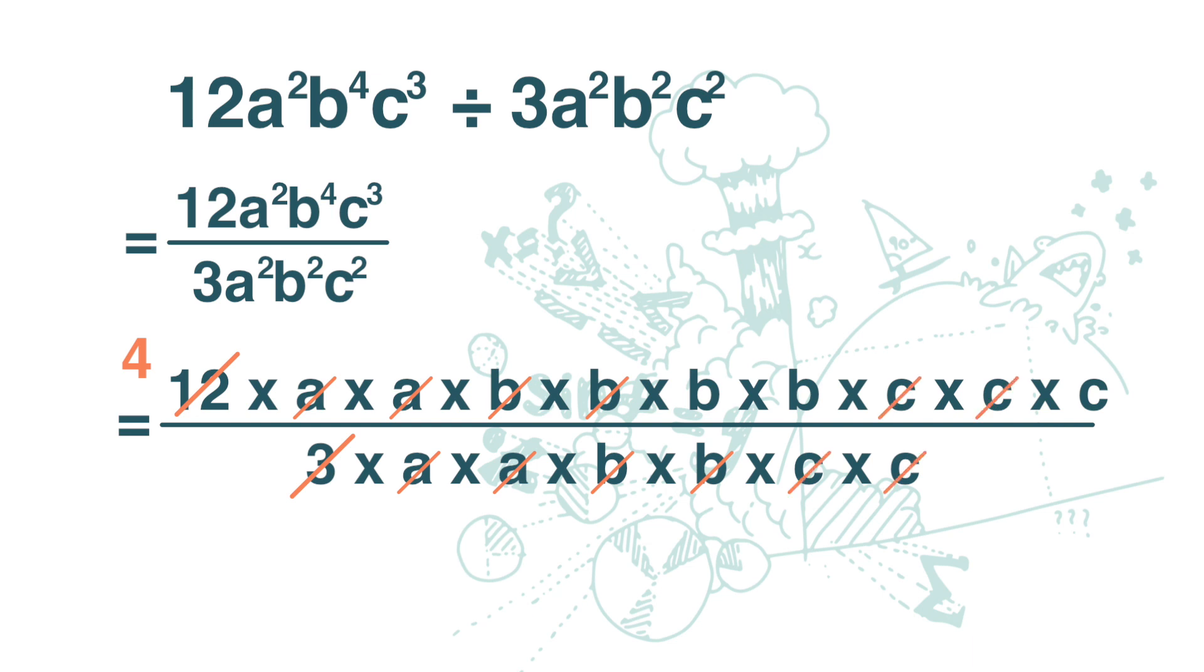So we are left with a 4, 2b and 1c. 4 times b times b times c is 4b squared c.